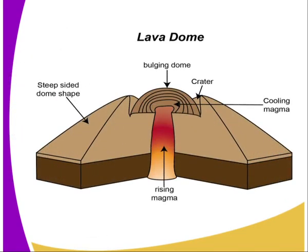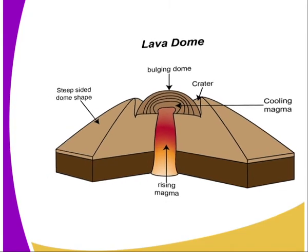You can see how the lava dome shape looks like — the steep side dome shape, the building dome crater, and the rising magma where the vent is.